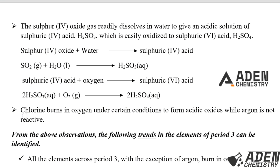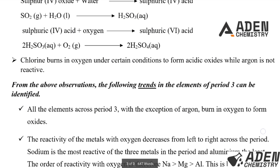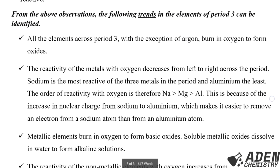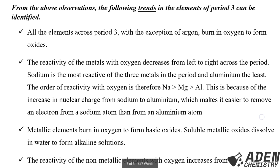Chlorine burns in oxygen under certain conditions to form an acidic oxide. Argon, the last element, is not reactive — it is a member of the noble gases, and noble gases are inert and stable, so they do not take part in chemical reactions.